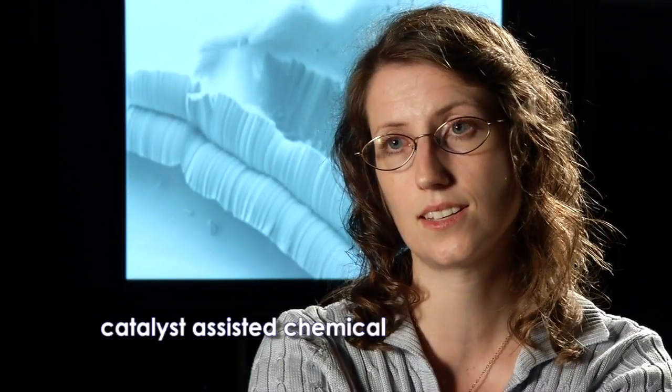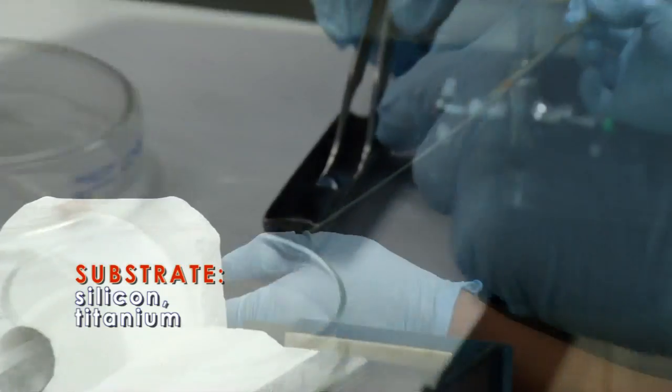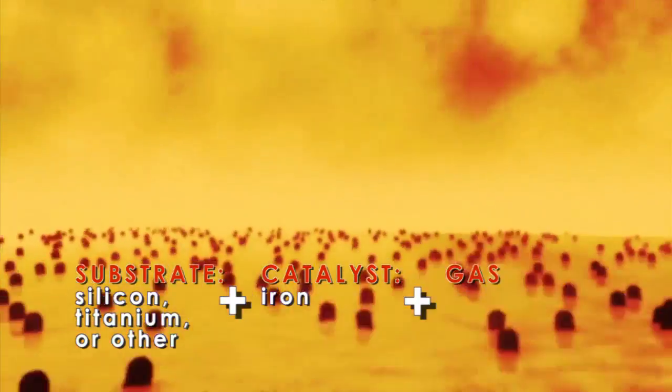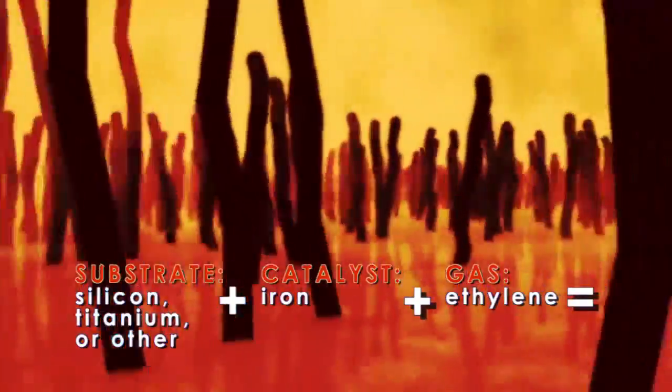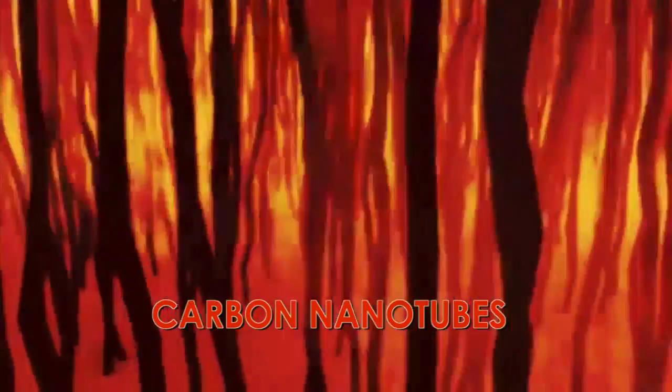The method that we use is called catalyst-assisted chemical vapor deposition, and that grows carbon nanotubes on a substrate. Put the substrate in this tube. You heat the tube up to about 750 degrees centigrade, and you flow a gas, and the gas has carbon in it. Because of the catalyst layer, you start to assemble these tubes. Carbon takes a very specific form as it grows.